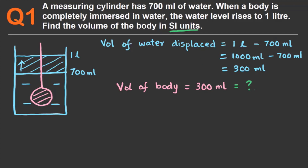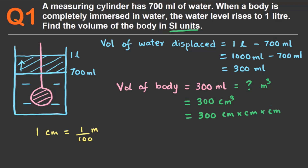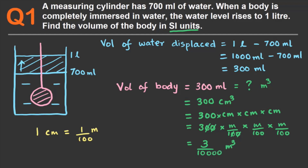The SI unit of volume is meter cube, so we need to calculate the volume in meter cube. We know that one milliliter equals one centimeter cube, so the volume of the body is 300 centimeter cube. Now we convert to meter cube: one centimeter is one one-hundredth of a meter. So 300 centimeter cube equals 300 into (1/100)³ meters, giving us 3 by 10,000 meter cube — that is 0.0003 meter cube.